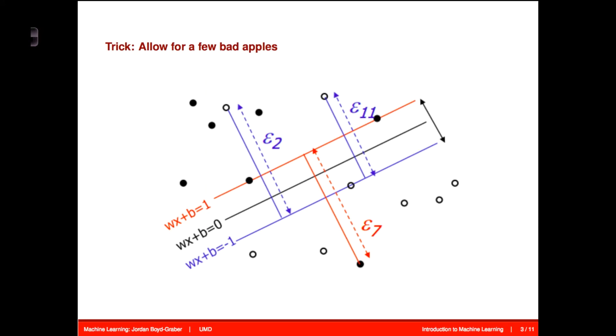So what we can do is add in slack variables. When we have bad apples, we can add in an additional term saying it's okay if you get this point wrong, this point wrong, and this point wrong. We're going to keep track of how much we get those points wrong with an additional variable that basically keeps track of how many data points lie on the wrong side of the hyperplane.